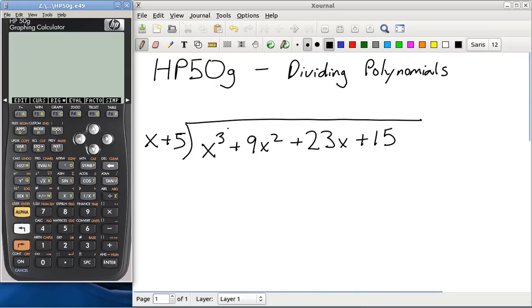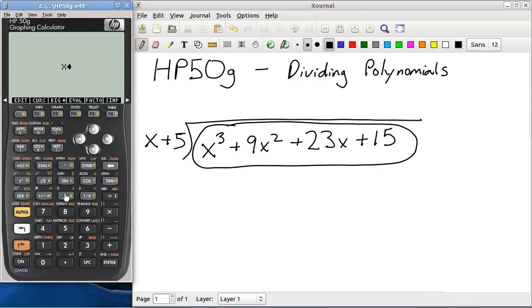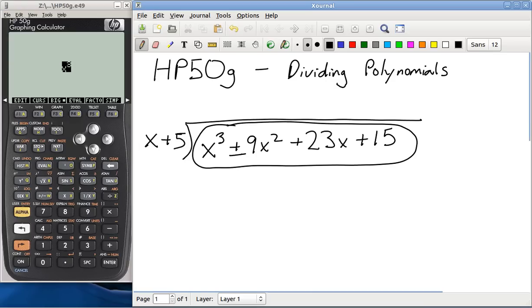First thing to do is we want to enter this. X cubed. See the y with the little x exponent here? Press that, that will bump your arrow up. Put your 3 in. And then, so that you're not writing along with the 3, we don't want that, hit the right arrow key. Highlight the whole thing, and then we're going to put in the plus.